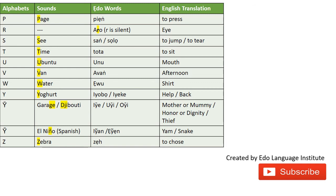We have 'AROO,' which is the EDO word for 'I.' You've also come across the silent R before in the word 'ISAI' — the word for key — where the R is treated as though it doesn't exist but it's still there. For the S sound, we have 'SUN' which means to jump, and 'SOLAR' which means to tear something.